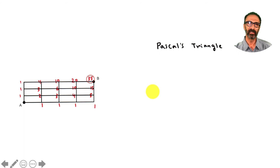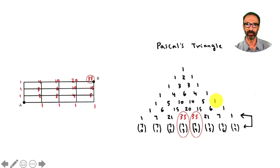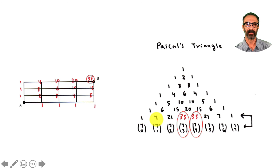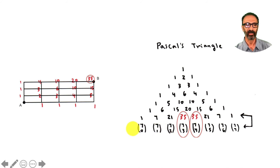If you rotate these corner numbers, you'll recognize Pascal's Triangle. The numbers 1, 7, 21, 35, 35, 21, 7, 1 correspond to C(7,0) through C(7,7). Our answer 35 appears as both C(7,3) and C(7,4) — which makes sense since choosing 3 ups out of 7 is the same as choosing 4 rights out of 7.